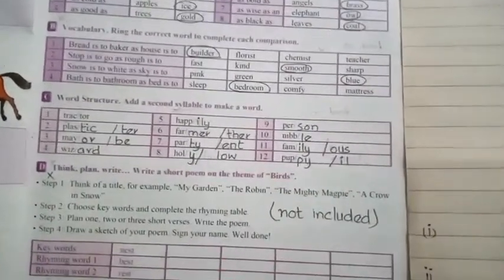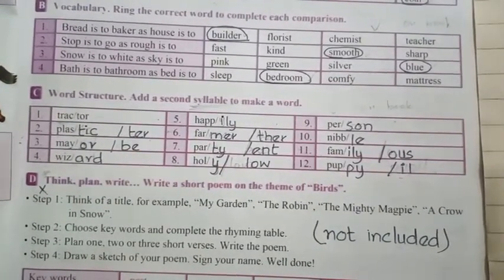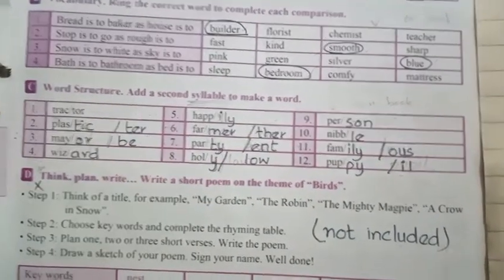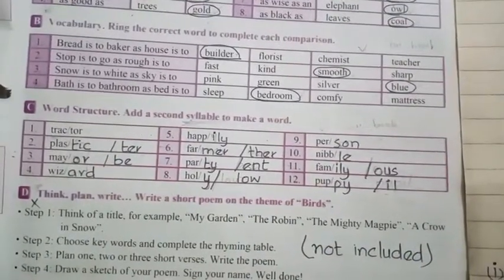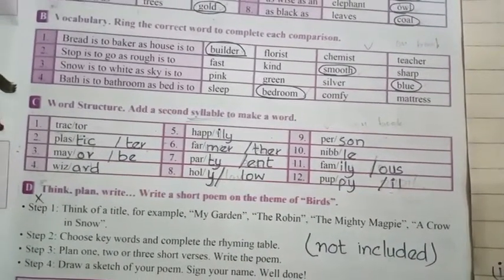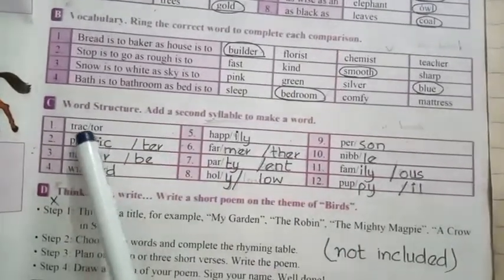Now let's move towards exercise C. Exercise C is all about add a second syllable to make a word. Now do you know what is a syllable? A syllable is a word that is used in pronunciation. It divides a word into parts. Now first of all the first one is done for you: tractor.